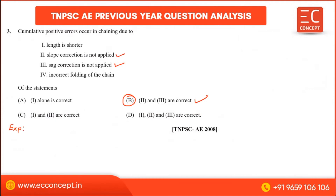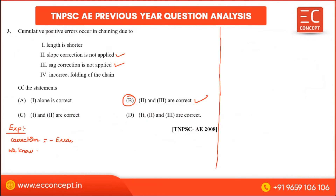Explanation: correction is equal to minus error. If the correction is negative, the error is positive. Slope and sag corrections are always negative, so that error is always a positive cumulative error.